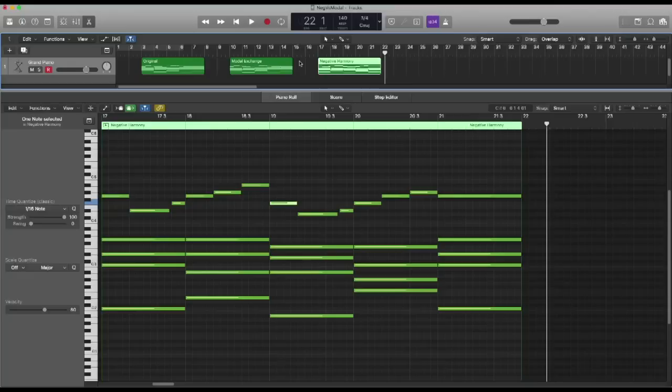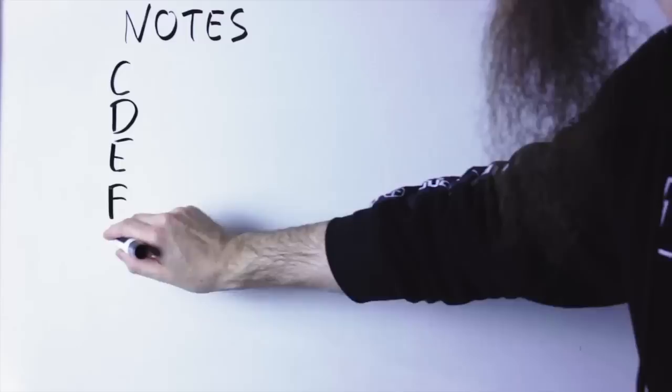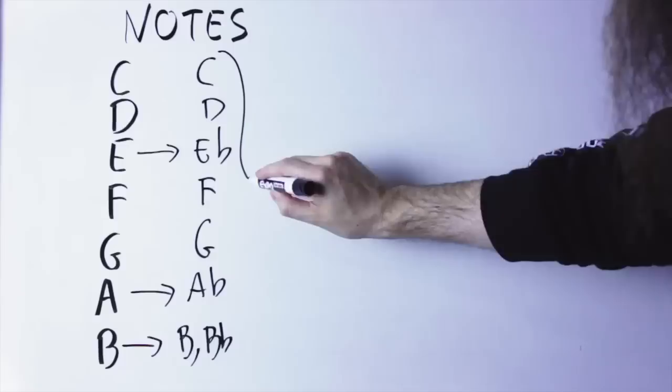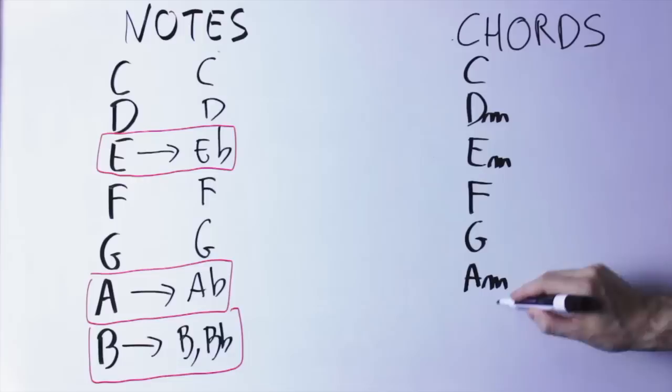So how do they work and how can you use them in your own music? Let's start with modal exchange, and we're going to do everything in C major. The idea is simply to change the C major scale into the C minor scale by changing all the E notes into E flat notes, all the A notes into A flat notes, and sometimes changing the B into B flat.